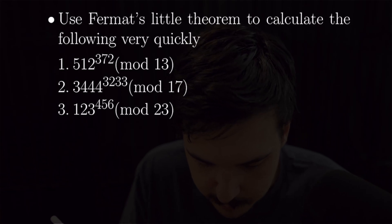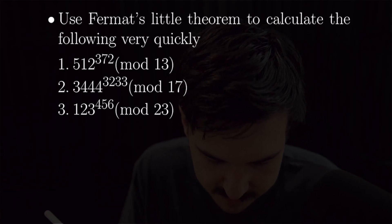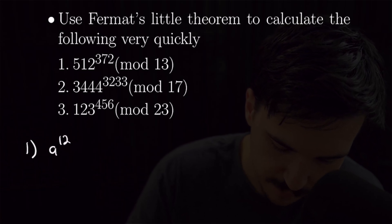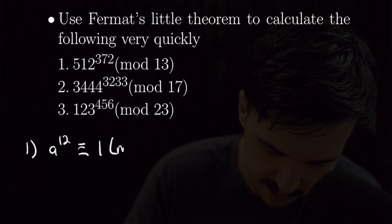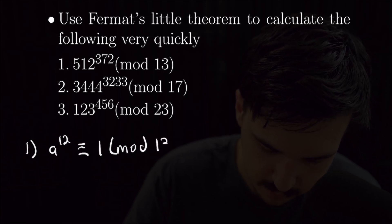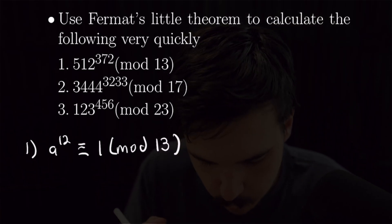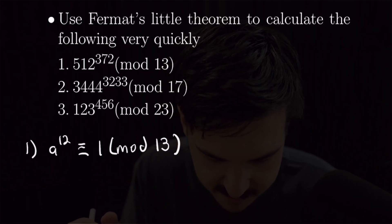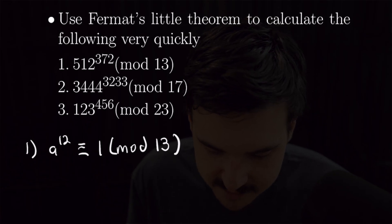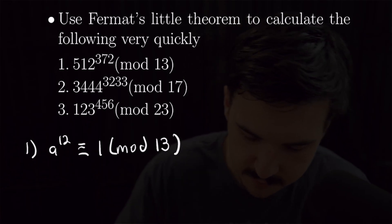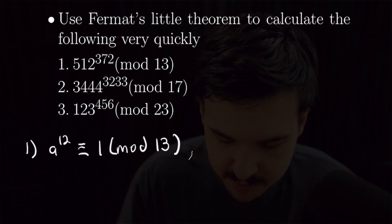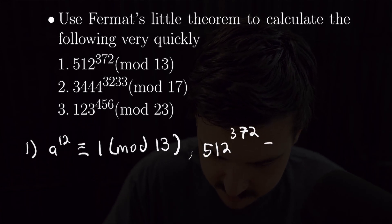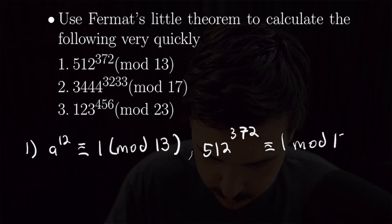For number 3, we're going to be using Fermat's Little Theorem to quickly reduce these. Beginning with the first one, we know that a to the 12th power is congruent to 1 mod 13. So we're going to want to rearrange our 512 to express it as a 12th power. Plugging it into a calculator, I can see that 12 is a divisor of 372. So that finishes that one off right away — we have that 512 to the 372nd power is congruent to 1 mod 13.